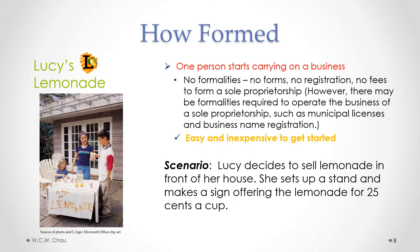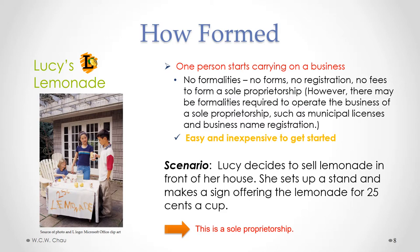A scenario we will be working with throughout this module is called Lucy's Lemonade, which involves a little girl named Lucy who starts up a lemonade business. We'll see her lemonade business evolve from being a sole proprietorship all the way to being a public corporation. The basic scenario starts with Lucy deciding to sell lemonade in front of her house — she sets up a stand and makes a sign offering lemonade for 25 cents a cup. In doing so, she has created a sole proprietorship.